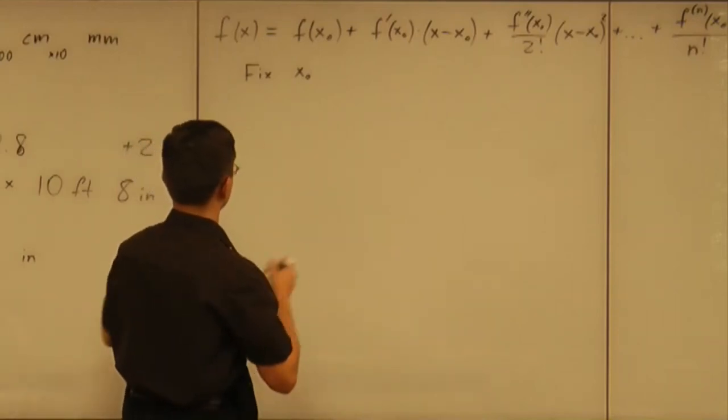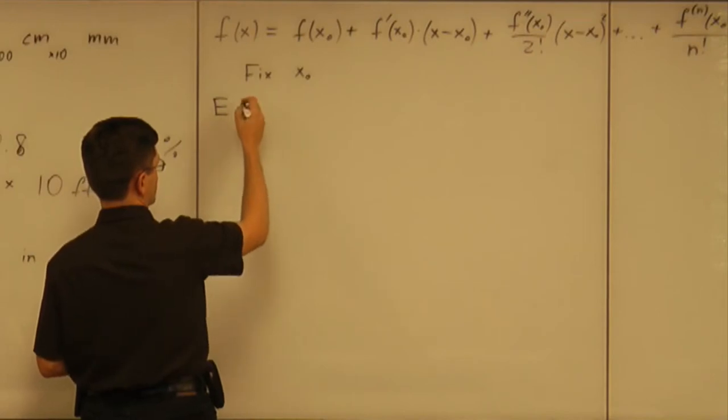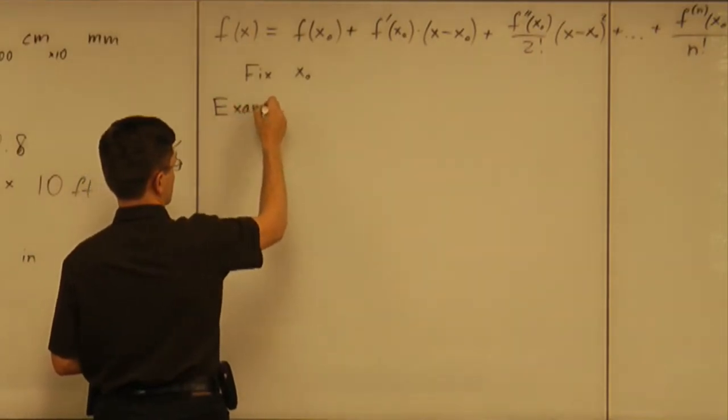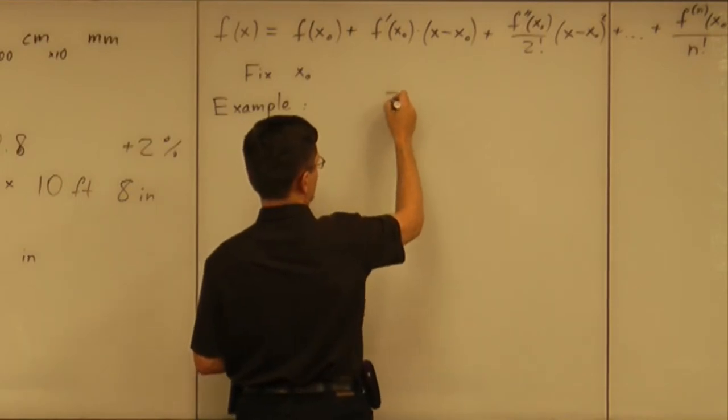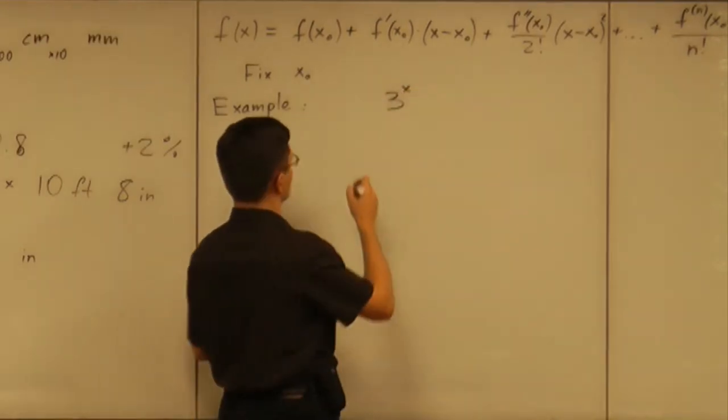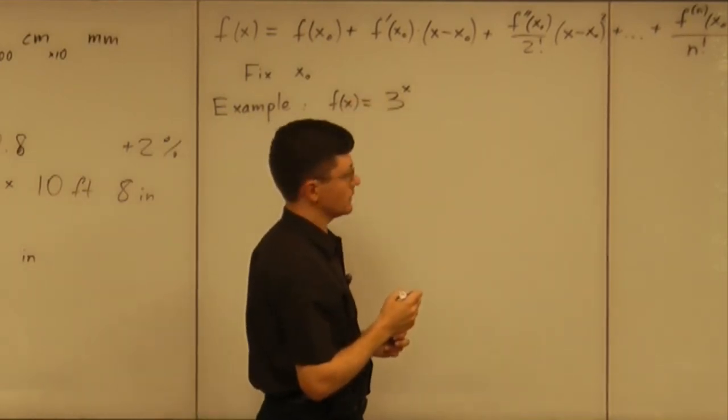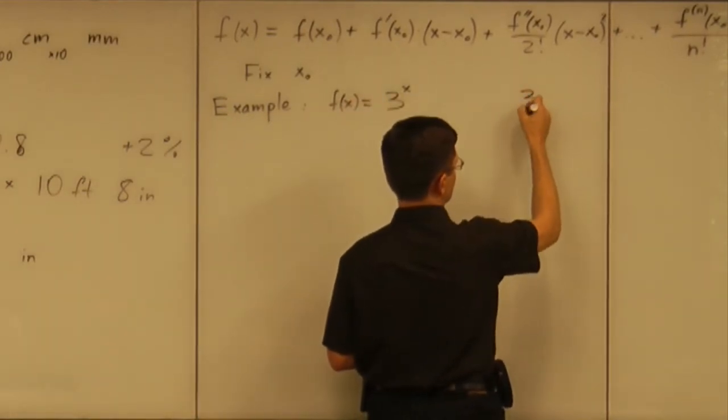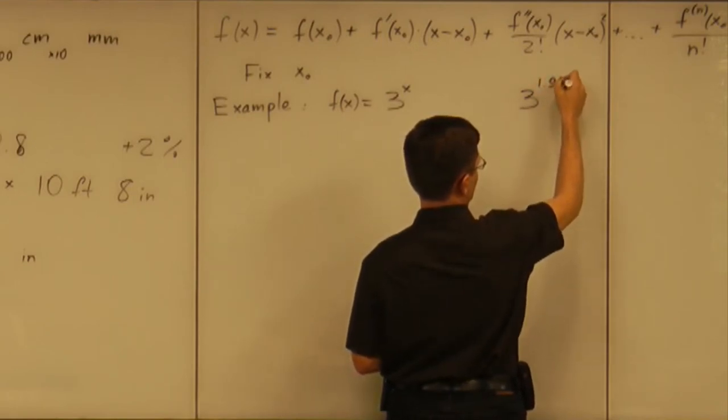From a computation point of view, let's look at that example I considered yesterday. I had to look at the function 3 to the power x, so f(x) equals 3^x, and I specifically wanted to know something about the number 3^1.997.